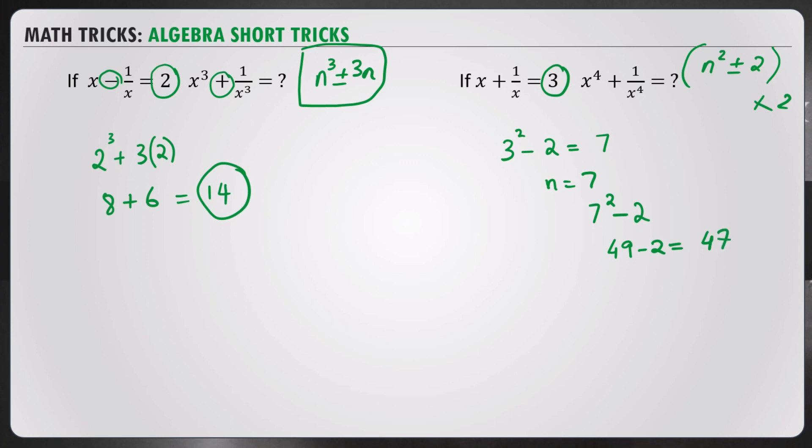We have to do it one more time with n equal to 7, your new value. We work it with 7 squared again, minus 2 because it's plus, which gives 49 minus 2, equal to 47. You basically work n squared plus or minus 2 twice to get your answer when it's the fourth power.